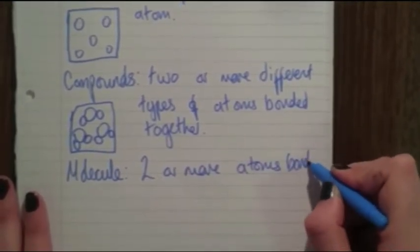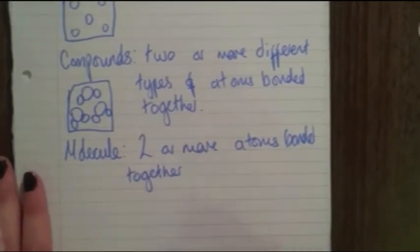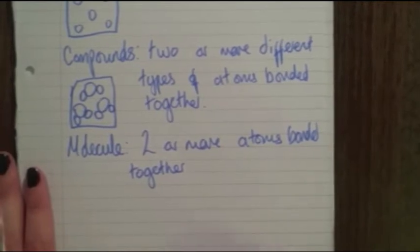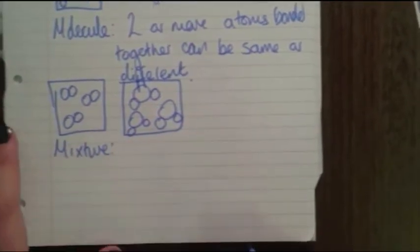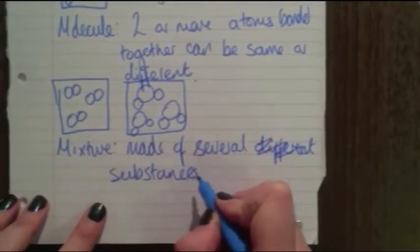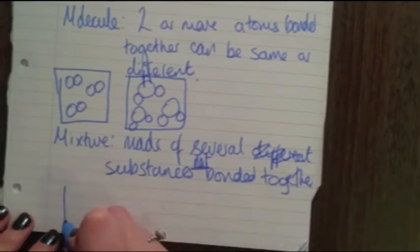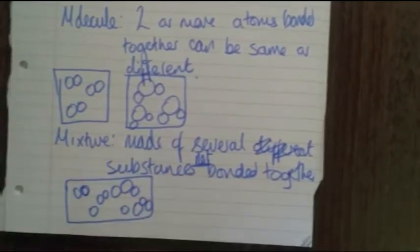The third definition is a molecule, and this is two or more atoms bonded together where the atoms can either be the same or different. The diagram on the left shows a molecule of two of the same atoms bonded together, and the diagram on the right shows two different atoms bonded together. Our last definition is a mixture, which is made up of several substances not bonded together — these substances can be a molecule, a compound, or an element.